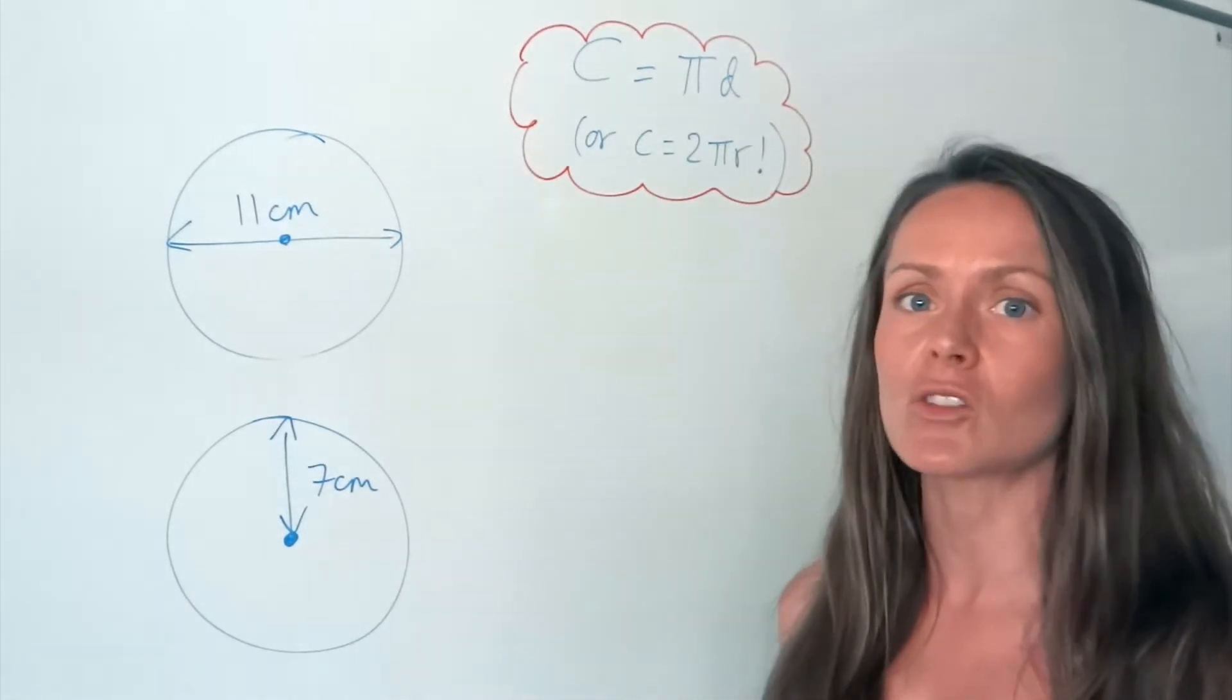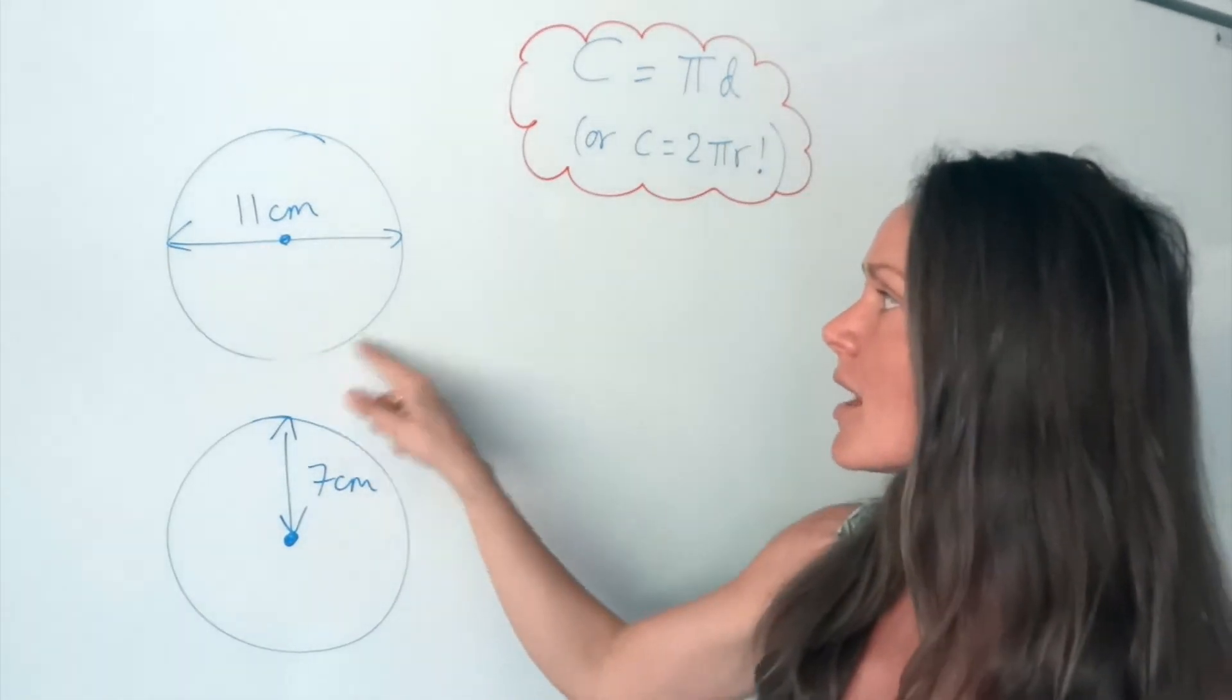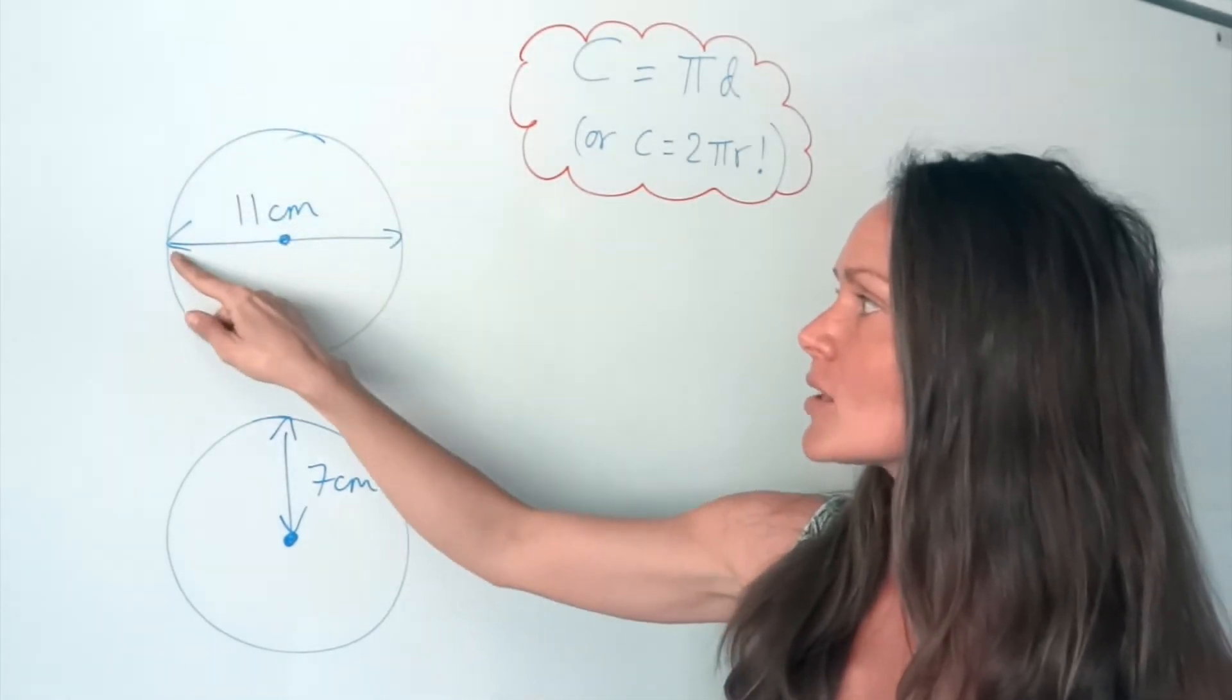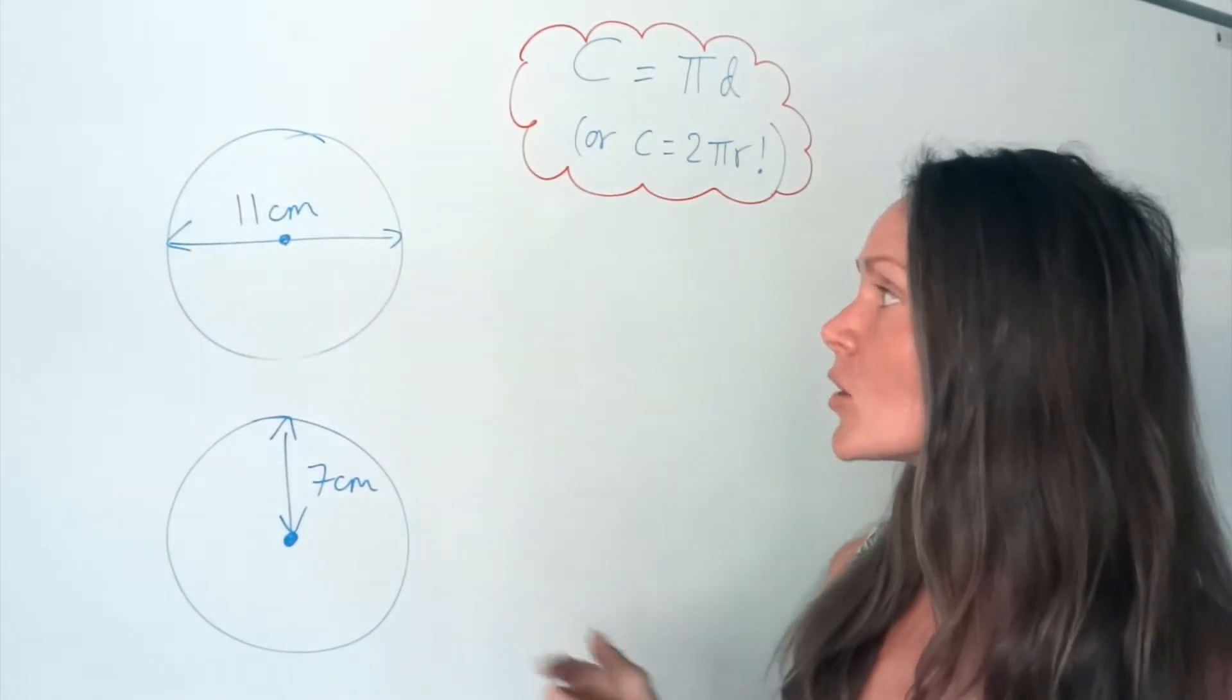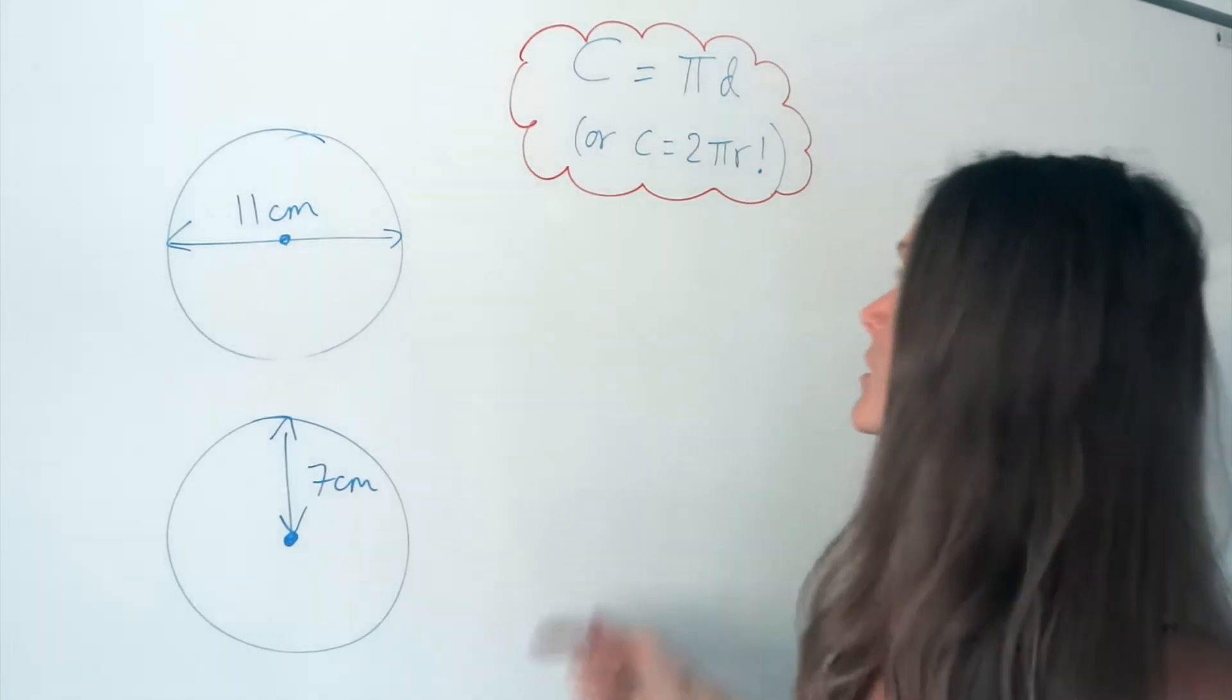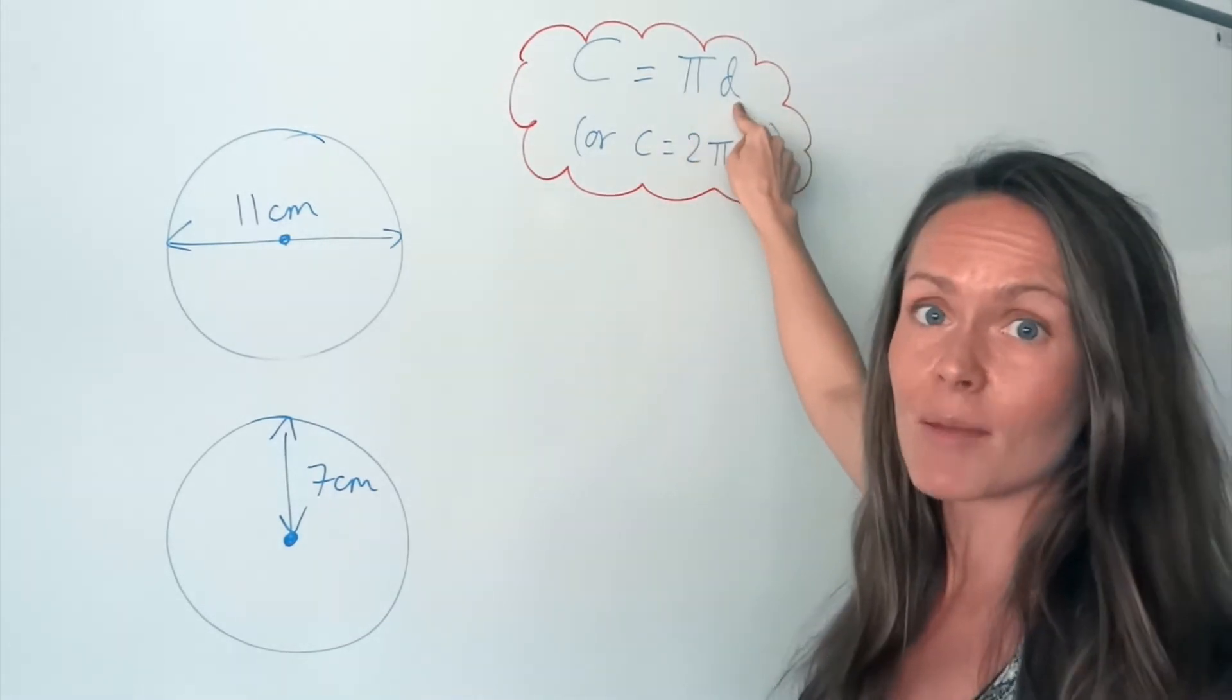Now the diameter is just the distance all the way across the circle, like in this example here. So from here to here. So all you have to do to work out circumference is multiply pi by the diameter.